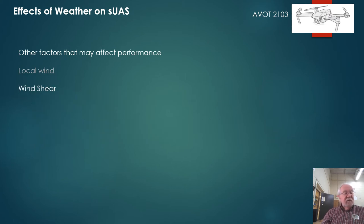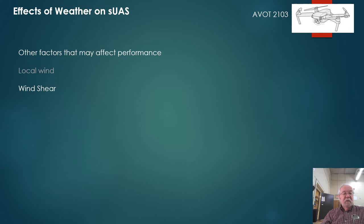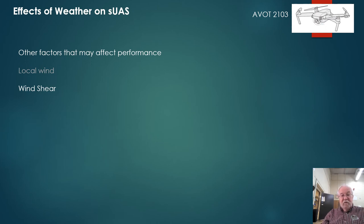Other factors include wind shear, which is where wind at different altitudes changes direction. Wind shear is simply a sudden drastic change in wind speed or direction over a very small area. Wind shear can subject an aircraft to violent updrafts and downdrafts as well as changes in horizontal movement. While wind shear can occur at any altitude, low-level wind shear is especially hazardous due to the aircraft's proximity to the ground. It is commonly associated with passing frontal systems, thunderstorms, temperature inversions, and strong upper-level winds.